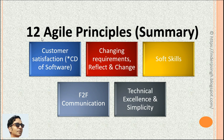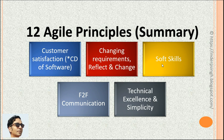Here is a summary of the 12 agile principles: customer satisfaction is the highest priority, and the team should achieve it by continuous delivery of value in working software. The team should welcome changing requirements. The team should reflect at regular intervals and change processes to become more effective. The team should have soft skills like collaboration and motivation, and should be empowered. Face-to-face communication is the most effective way to exchange information within the team. The team should focus on technical excellence and simplicity in the software.